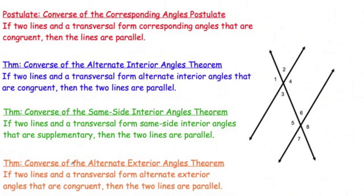And last but not least, if two lines and a transversal form alternate exterior angles that are congruent, then the two lines are parallel. So, 1 and 8, alternate exterior angles, if they're congruent, then we have it. It's exactly the same as before, it's just the converse of what we were doing. We were starting with the end, working towards the beginning.